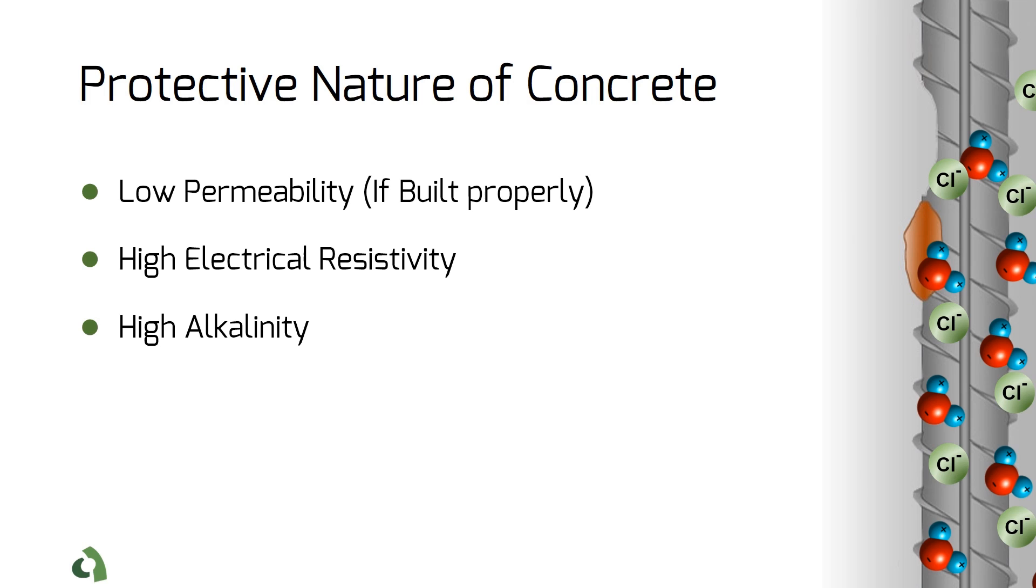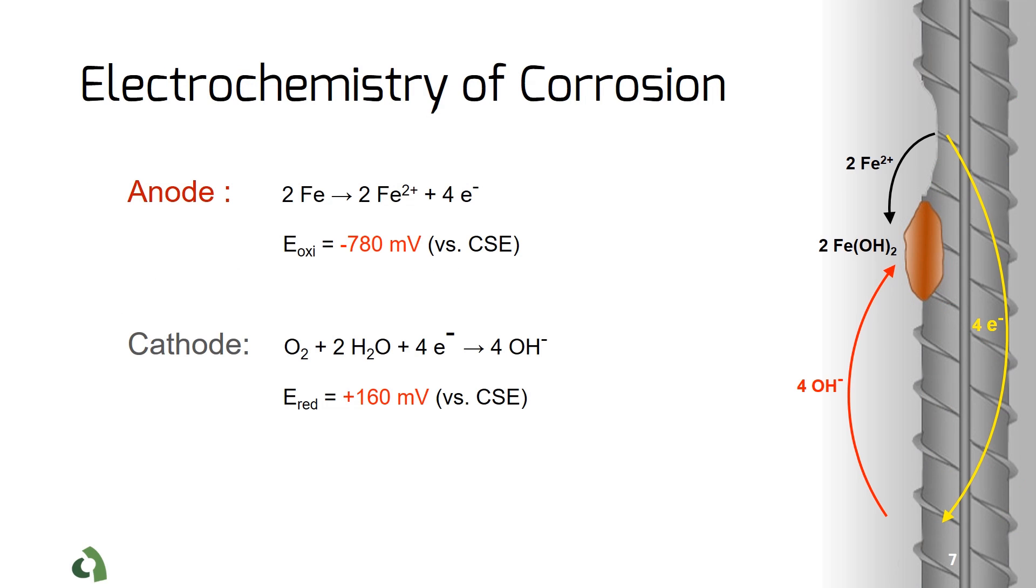As I mentioned earlier in this presentation, the porosity of concrete makes it possible for ions to penetrate into concrete and make the concrete itself act as an electrolyte. Corrosion happens in this environment, and the movement of electrons in concrete creates an electrical potential field inside concrete over the surface of rebar.